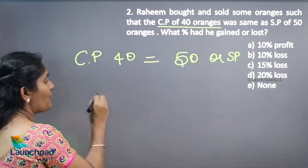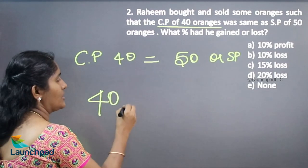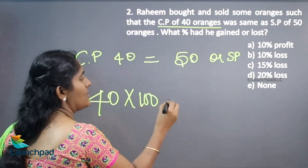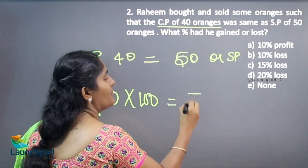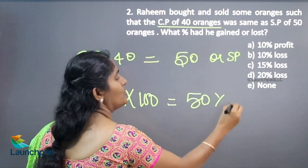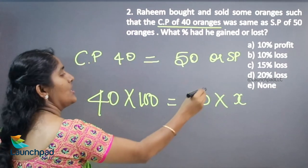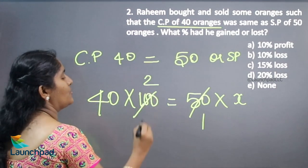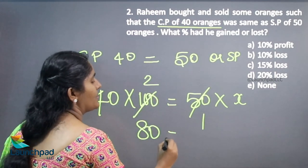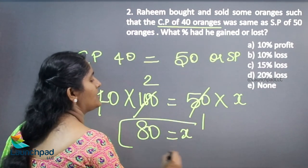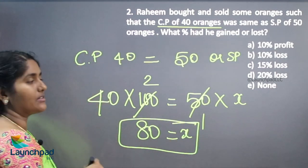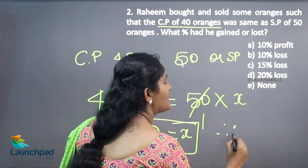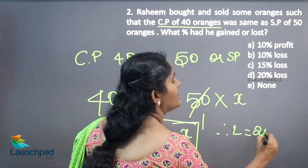So I can equate 40 number of oranges into 100 percentage, which is equivalent to 50 number of oranges into how much percentage. This is 1 times, this is 2 times, 40 into 2 is 80. So 80 percentage means your selling price is 80 percentage, therefore your loss is 20 percentage.